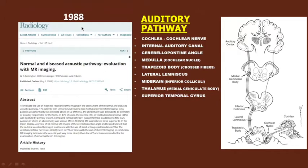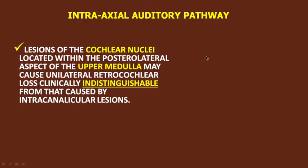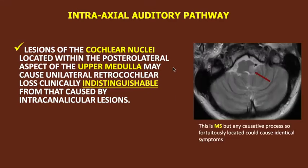In this article from Utah in 1998, the normal and diseased acoustic pathway was described. The most important takeaway was the recognition that lesions of the cochlear nuclei, located within the posterolateral aspect of the upper medulla, may cause unilateral retrocochlear loss clinically indistinguishable from that caused by intracanalicular acoustic tumors. This is an MS plaque, but any causative process so located could cause identical unilateral retrocochlear symptomatology.